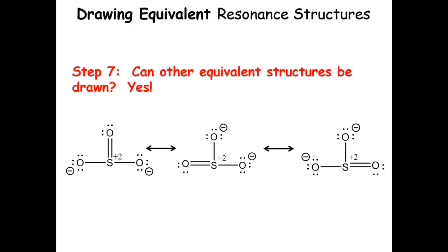Drawing those other structures, we end up with three equivalent resonance structures. We have to draw all three of these to fully describe the bonding in sulfur trioxide.